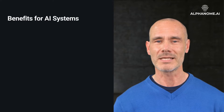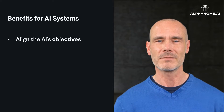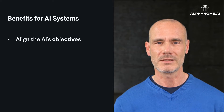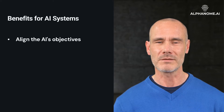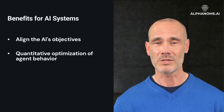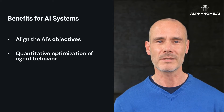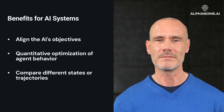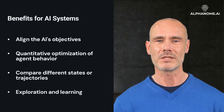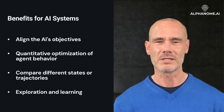Utility functions provide several key benefits. They align the AI's objectives with the system designer's goals, and rewards can be shaped to represent what the developer wants the agent to achieve. They allow quantitative optimization of agent behavior towards the most useful outcomes, provide a way to compare different states or trajectories through a problem space, and guide exploration and learning. The agent can use the utility function to drive data collection and training.